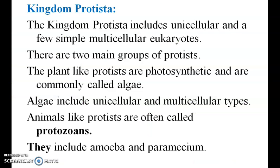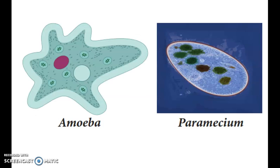Kingdom Protista. These are unicellular and a few simple multicellular eukaryotes. There are two main groups. Animal-like protists are often called protozoans. They include Amoeba and Paramecium.